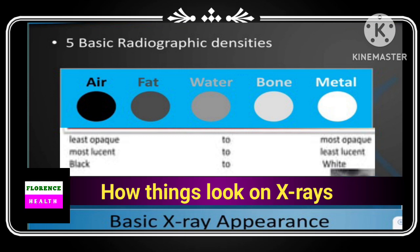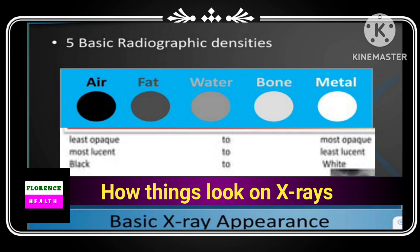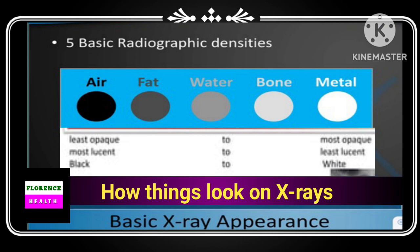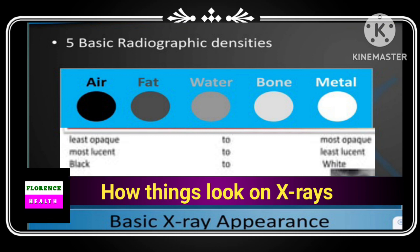Air is least radiopaque, most radiolucent, and black. Metal is most radiopaque, least radiolucent, and white. As you proceed from air to metal, opacity increases but lucency decreases; as you proceed from metal to air, opacity decreases but lucency increases.